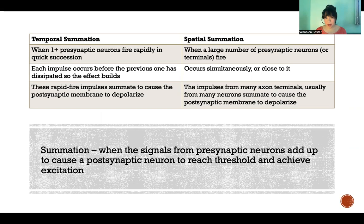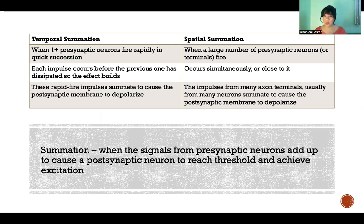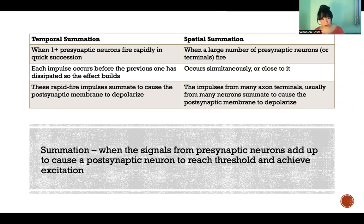What we mean by that is when we have presynaptic neurons — meaning a neuron that is sending a signal to another neuron — when one or more is sending those signals, those signals will add up to the point that the postsynaptic neuron